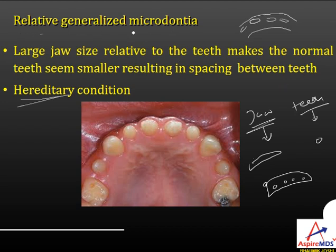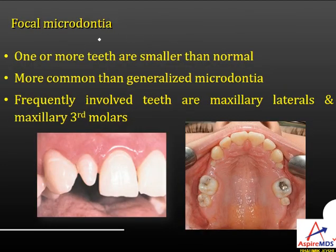Focal microdontia involves one or more teeth smaller than normal and is more commonly seen than generalized microdontia. It frequently involves the maxillary lateral incisors and maxillary third molars.